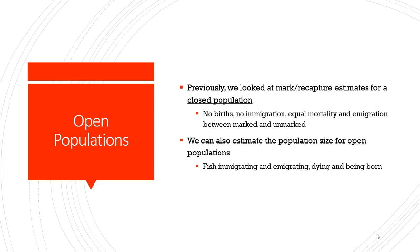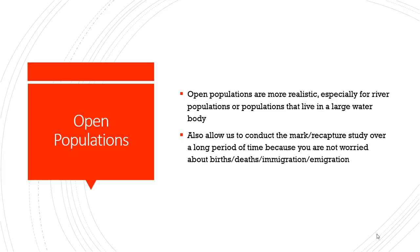We can also do a population size estimate for open populations. In an open population, you have fish coming and going, being born and dying. You don't have the restrictive assumptions of a closed population estimate. An open population might be more realistic — certainly for river populations or large reservoirs. Another advantage is that we can do these studies over a longer period of time, over years instead of weeks. The trade-off is probably less precision with the open population estimate.